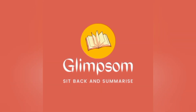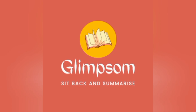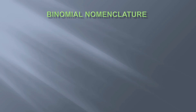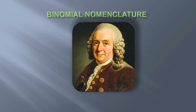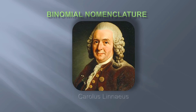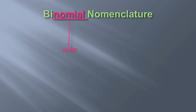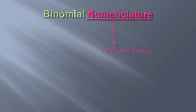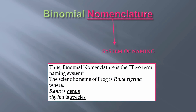Welcome dear friends. In this video we will study about binomial nomenclature. Carolus Linnaeus has been considered as the father of taxonomy because he developed a way to name and organize species that we still use today. In binomial nomenclature, bi means two, nominal means names, and nomenclature means system of naming. Thus, binomial nomenclature is the two-term naming system.